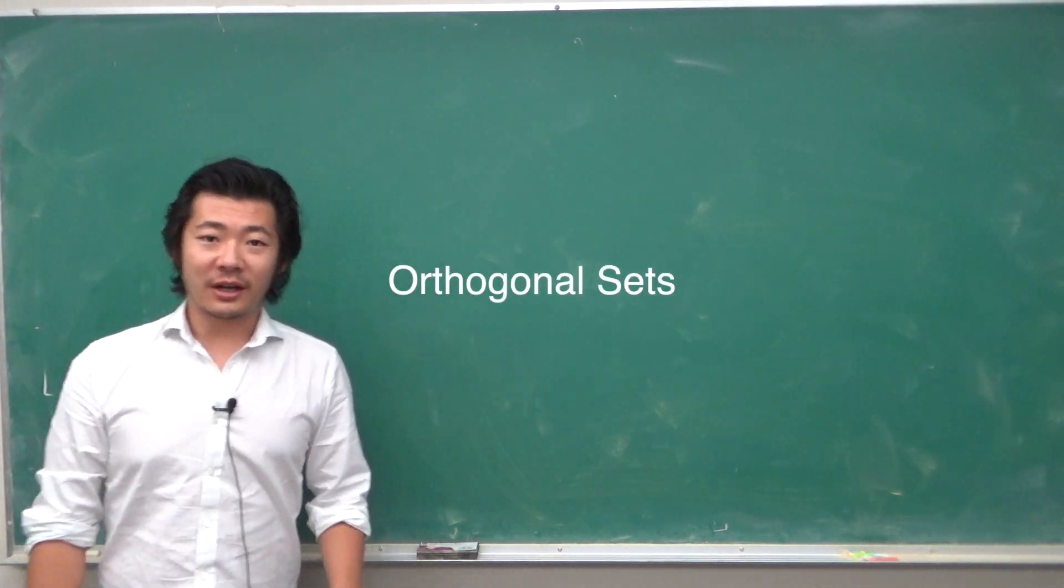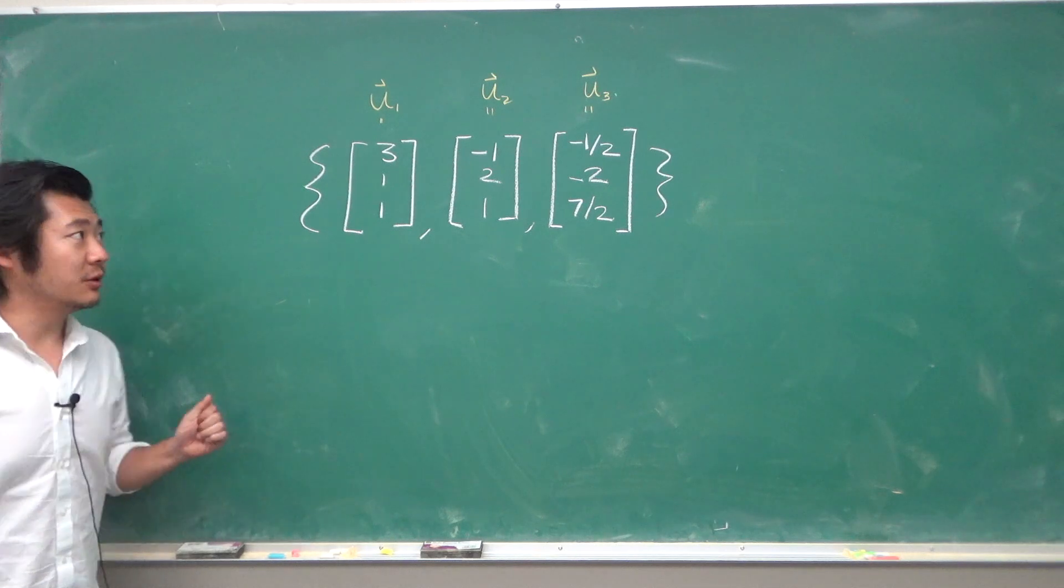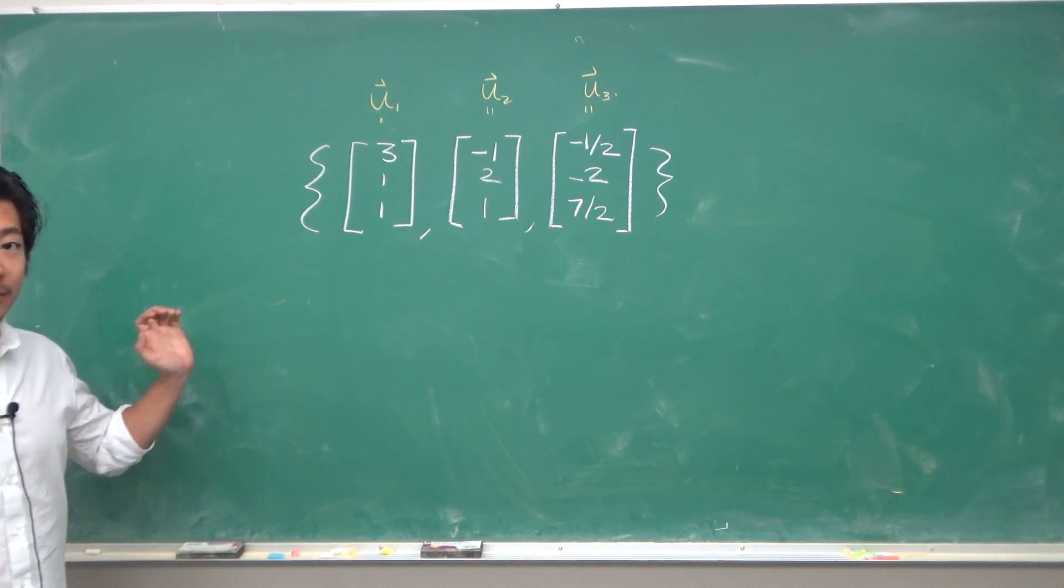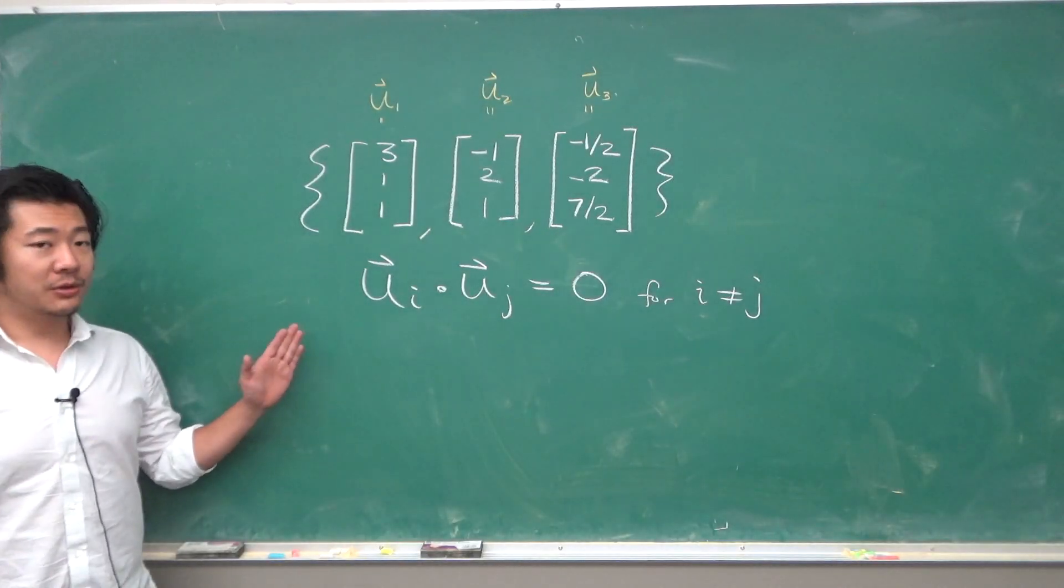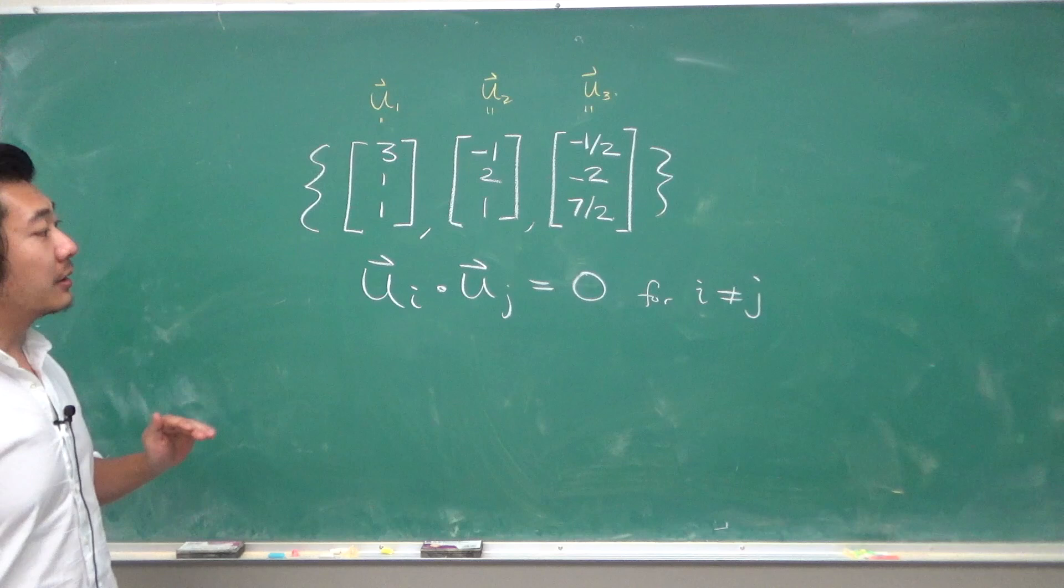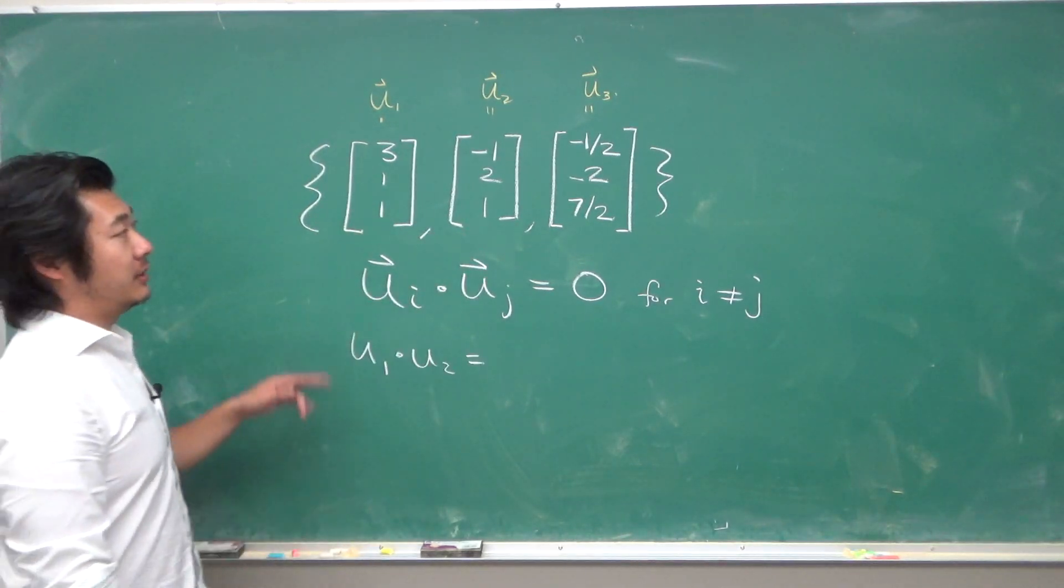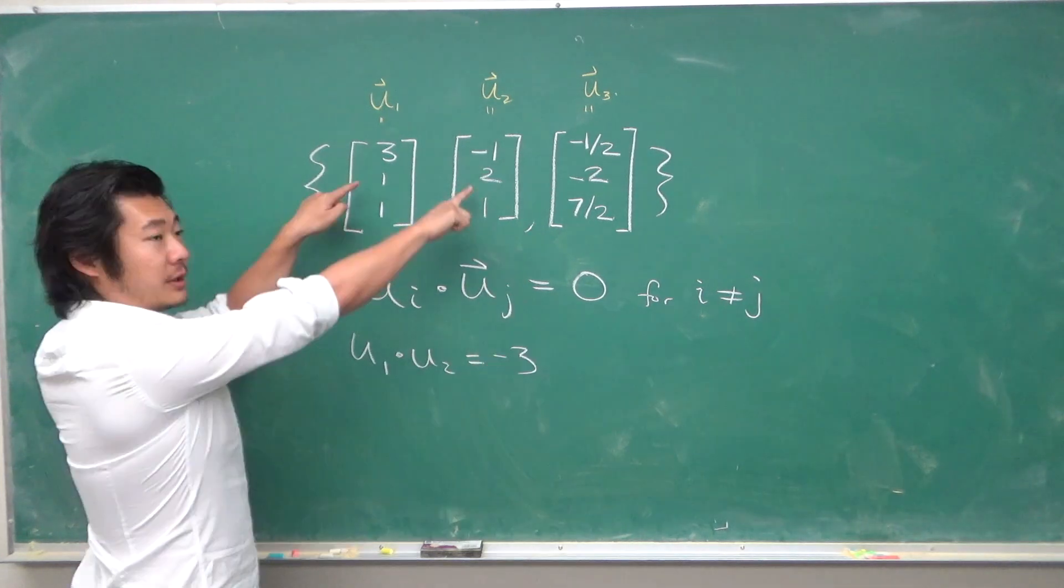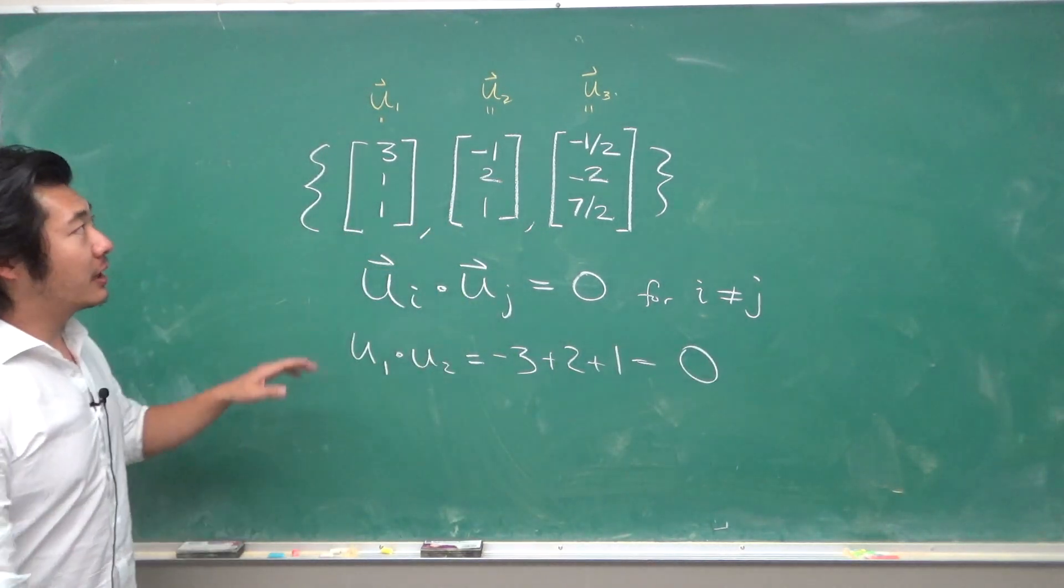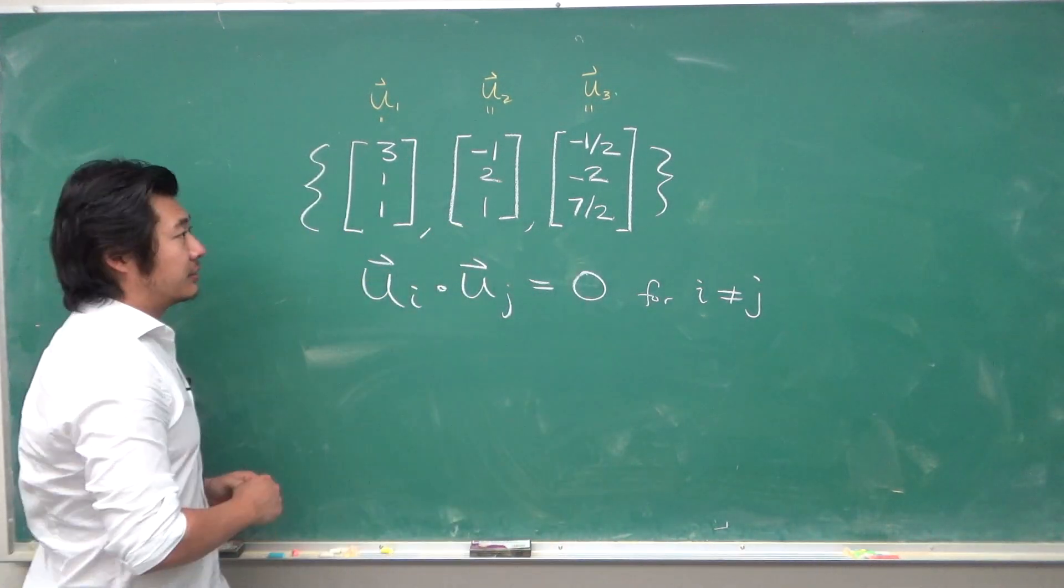In this video we will talk about orthogonal sets. First consider this set of three vectors u1, u2, u3. This set is an orthogonal set because the dot product between any two different vectors will be zero. You can try computing u1 and u2: this will be negative 3 plus 2 plus 1 which is zero. You can try the combinations u1·u3 and u2·u3.